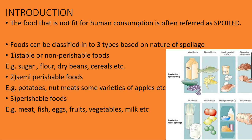Depending upon the nature of spoilage, food is classified into three types. The first is non-perishable food. 'Non' does not mean never, but they will take a long time to spoil, which is why we name them non-perishable or stable foods. Examples include sugar, flour, dry beans, and cereals — all of these come under stable or non-perishable foods.